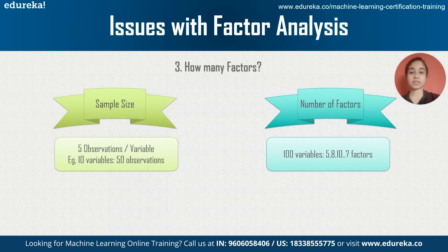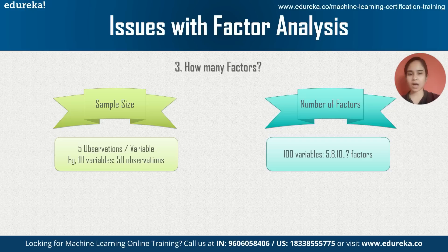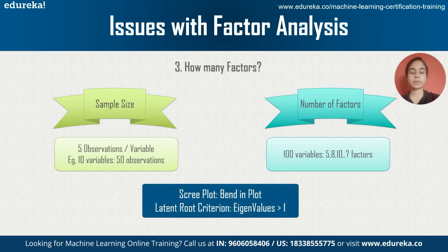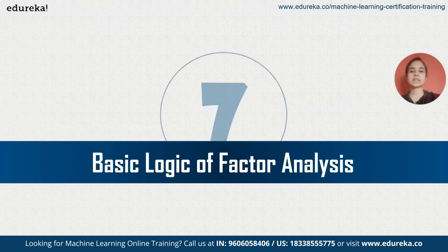Regarding how many factors to select: the rule of thumb for sample size is a minimum of five observations per variable — five variables need 25 observations, ten variables need 50, and so on. To determine the number of factors from many variables, you can make a scree plot and notice the bend in the plot, though this is not very intuitive. Alternatively, use the latent root criterion: if the eigenvalue for a factor is greater than 1, include that factor in your analysis.